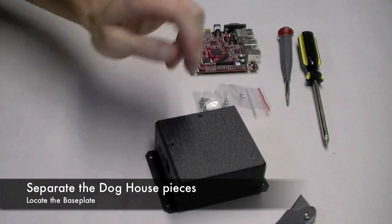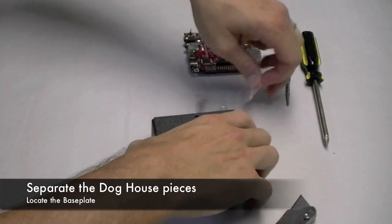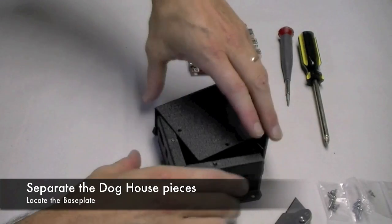Unwrap your doghouse and separate the parts. Look for the base plate and flip the base plate over.